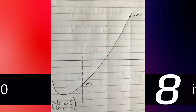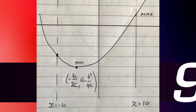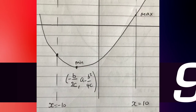The next case: if minus b over 2c is between minus 10 and 0, the turning point lies within the left half of the domain. The minimum value is the y-coordinate of the turning point itself: a minus b squared over 4c. The maximum is still at x equals 10, giving 100c plus 10b plus a.